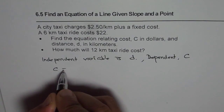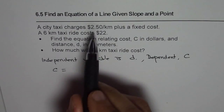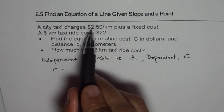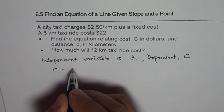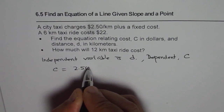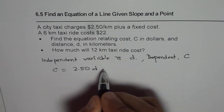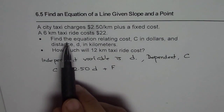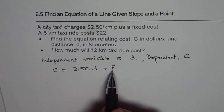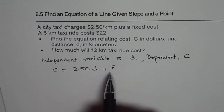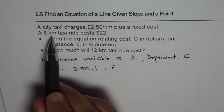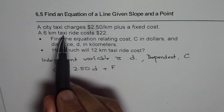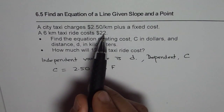Cost C equals the rate, which is given to us as 2.50, times the distance traveled, plus a fixed cost. Let me call this capital F. To find the equation, we need to find the value of F, which we can find with the help of the given point. It says a 6 kilometer taxi ride costs $22.